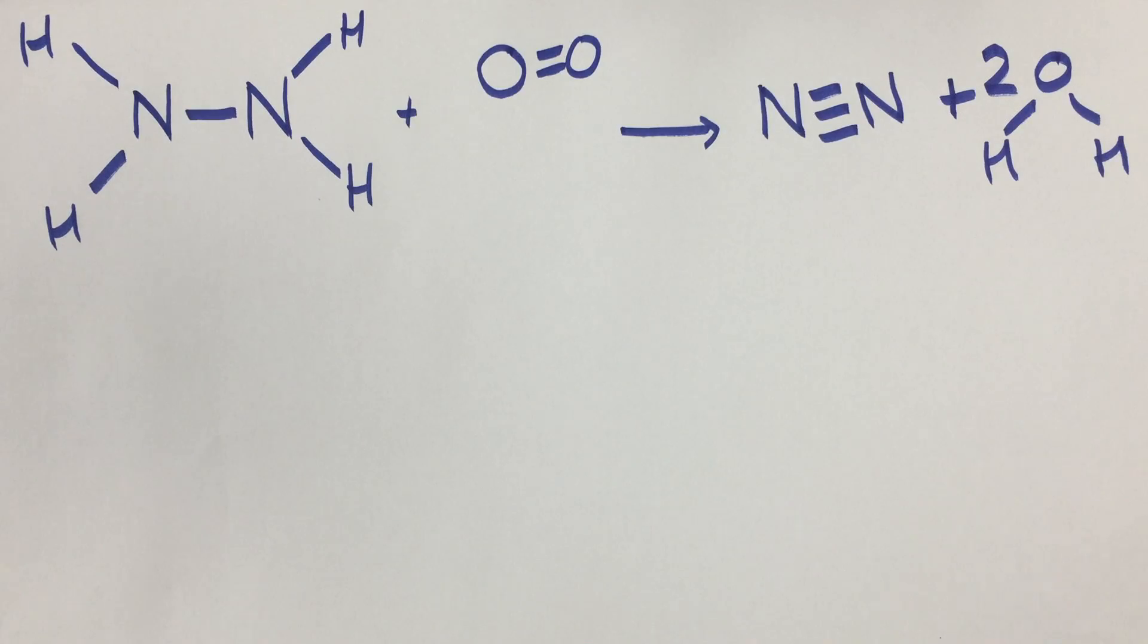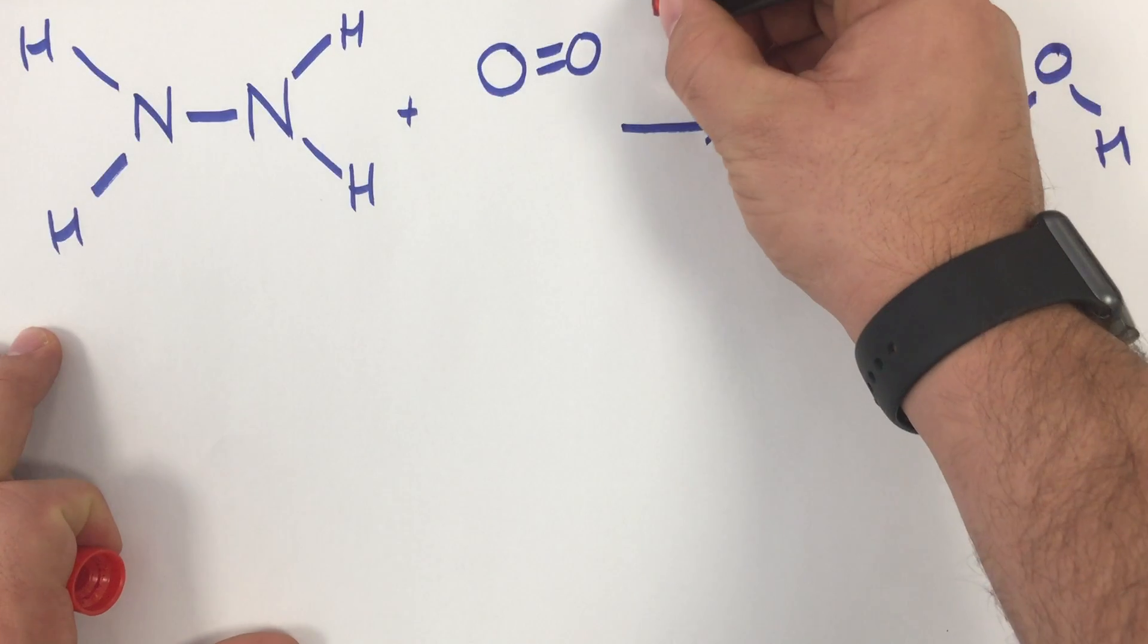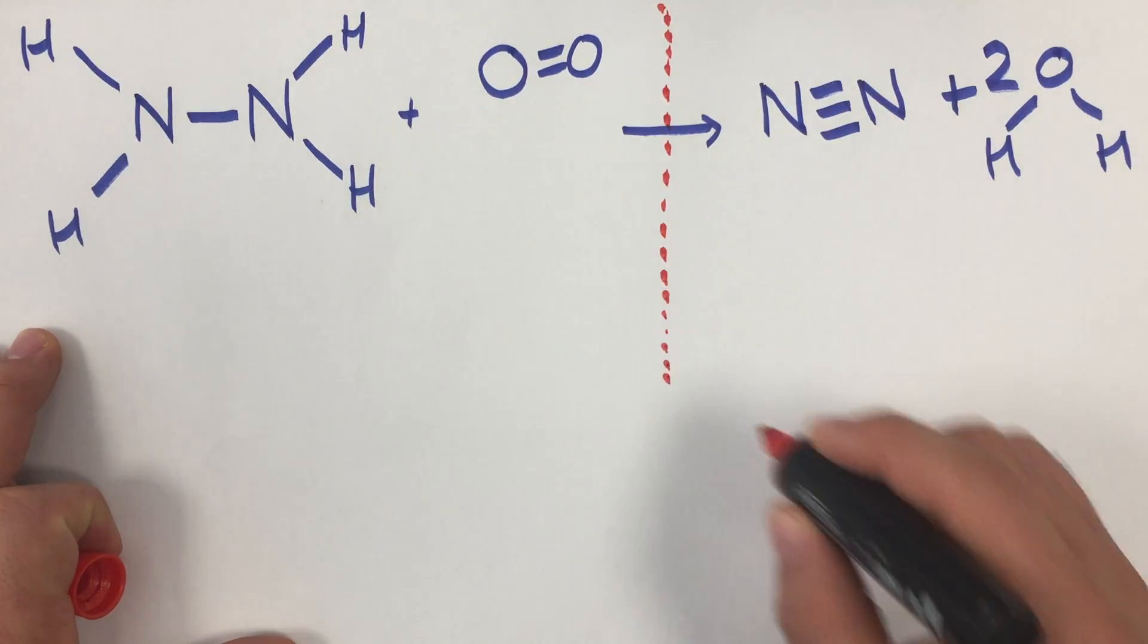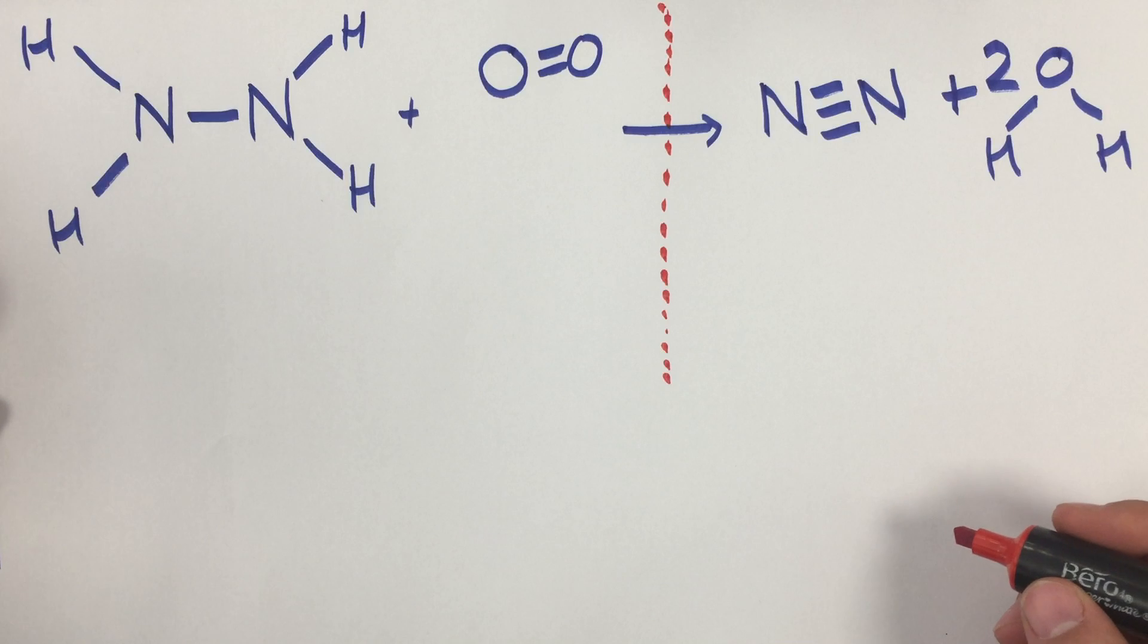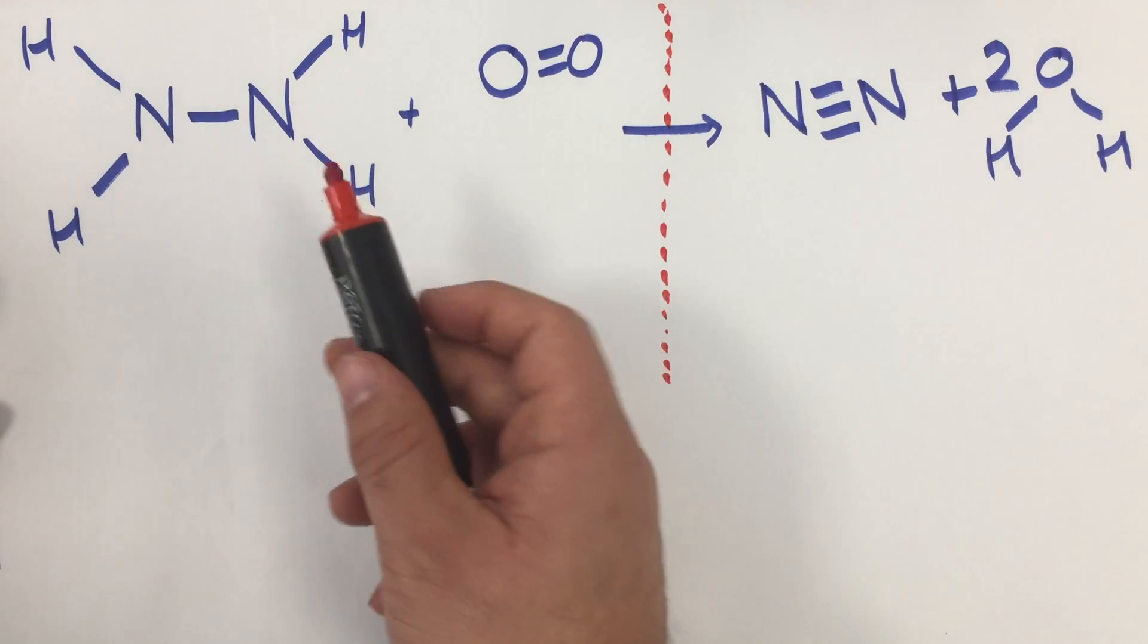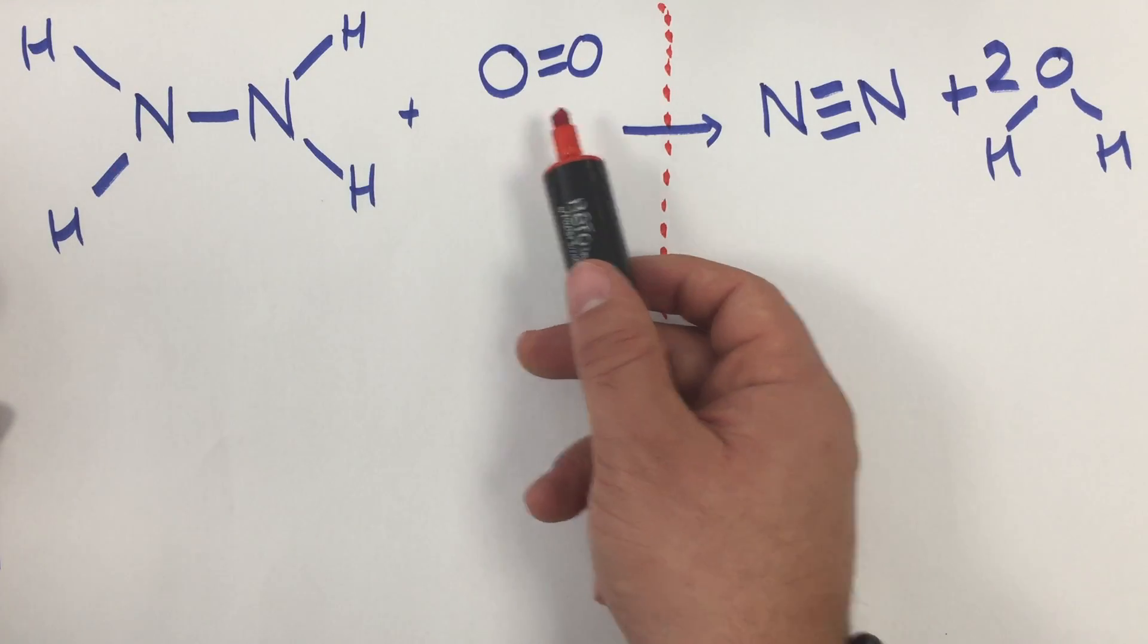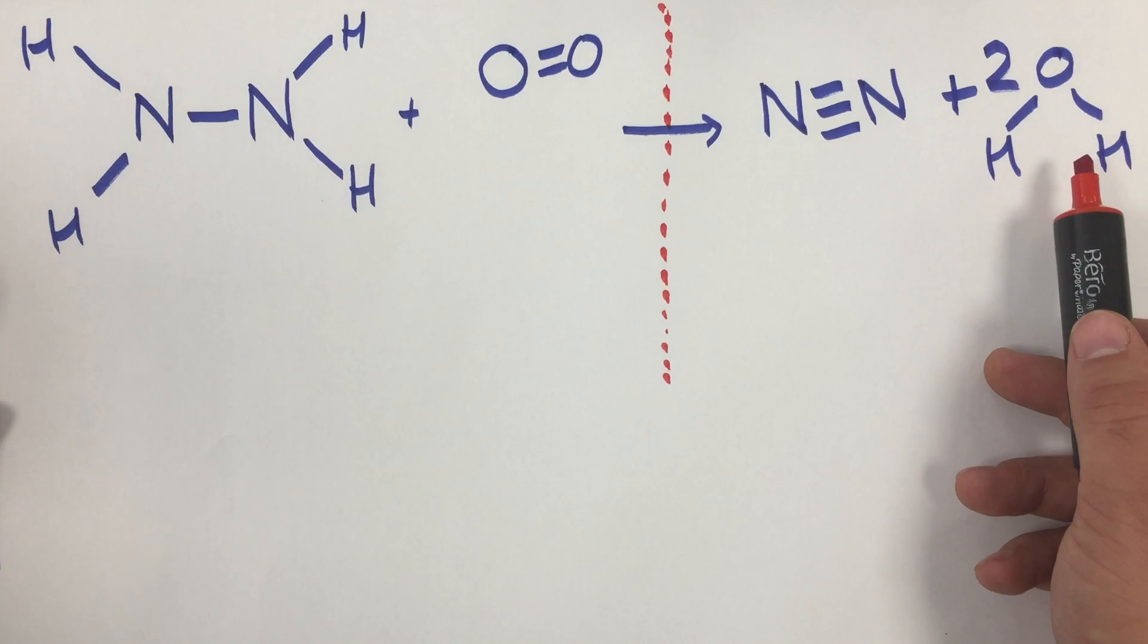When you're looking for bonds, what you're looking for is the lines. So the first thing you need to do is split the reaction in half and count each of the different types of bonds you have. In this reaction we have a fuel called hydrazine burning with oxygen, and we form nitrogen and water.